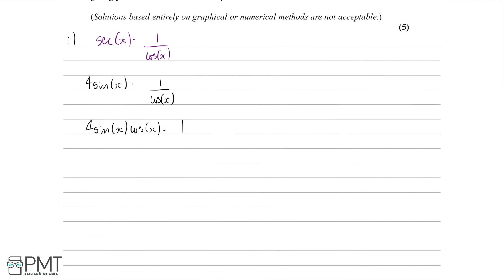We might be a bit stuck here, but what we need to realise is that we can use our double angle formula, because we have a sin times a cos. The double angle formula for sin is 2 sin x cos x equals sin 2x — you can get this from your formula book. So let's divide by 2, leaving us with 2 sin x cos x equals a half.